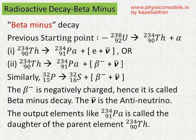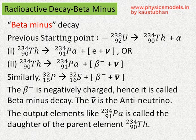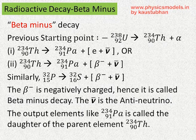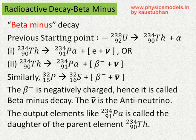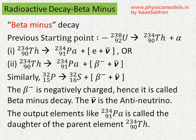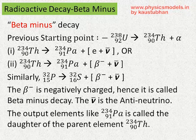Let's take a few examples. In the earlier video, we started with uranium-238-92, which decayed to thorium-234-90 plus an alpha emission. In this video, thorium-234-90 is also unstable, and it decays to protactinium-234-91 plus beta-minus emission plus an anti-neutrino. The beta-minus is called so because an electron with a negative charge is coming out of that nucleus.